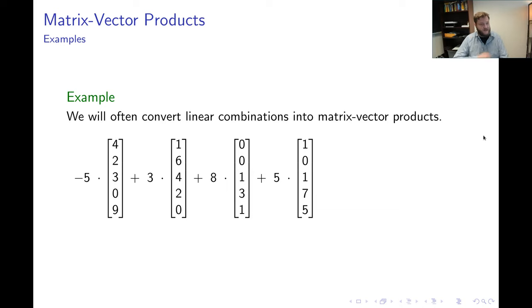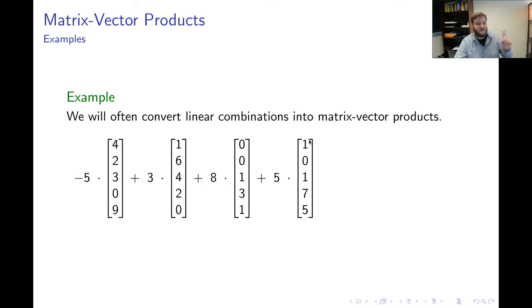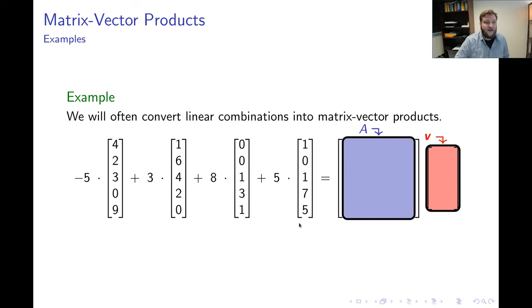Sometimes we're working on a problem with a big linear combination and it's useful to convert it into a matrix vector product. In this example, I'm taking a linear combination of 4 vectors. Each of these vectors has 5 coordinates, so each is a vector in R5.